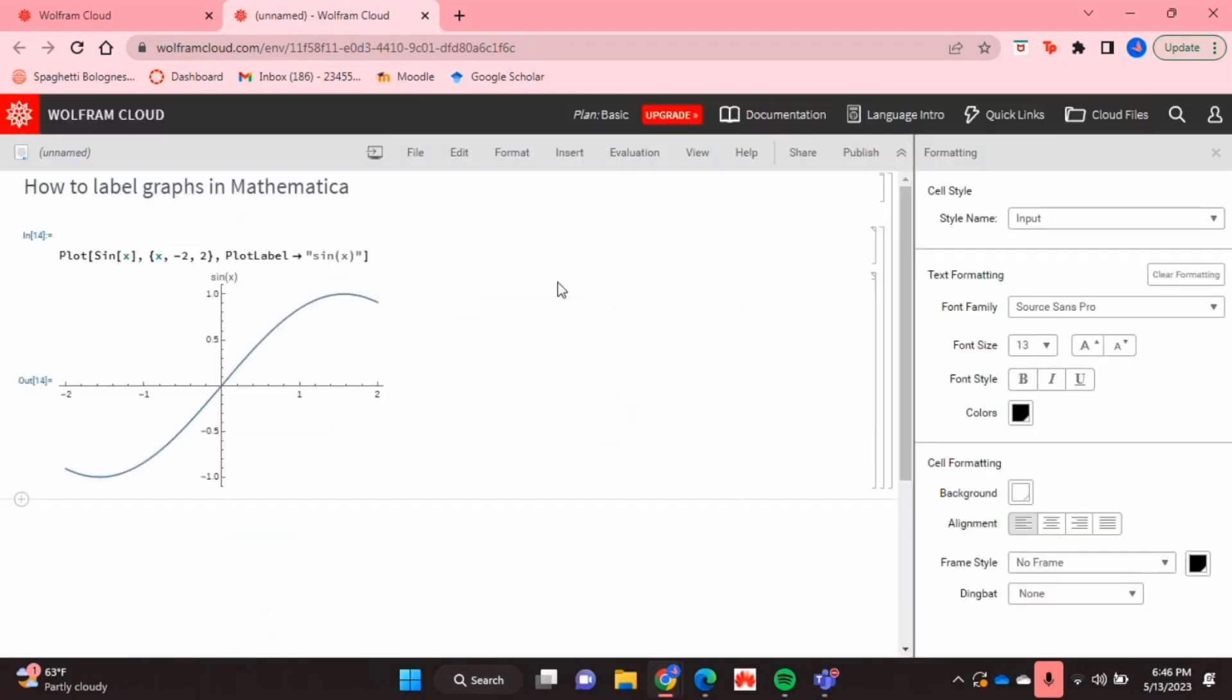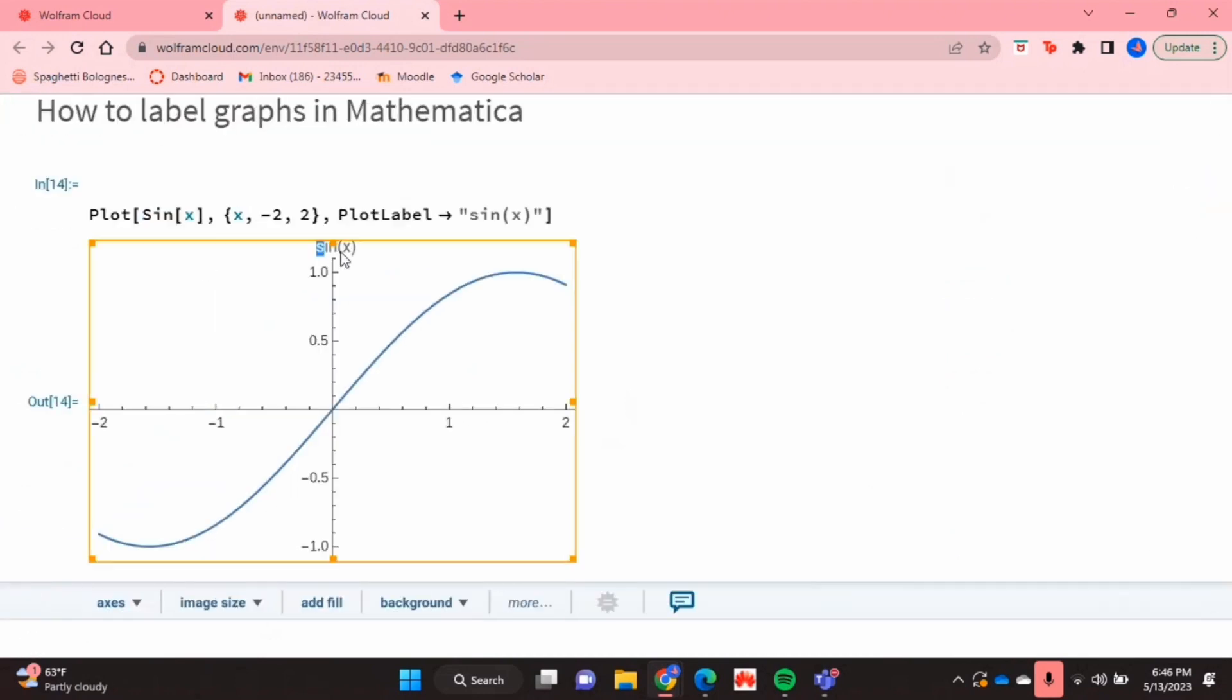So if I run this, as you can see my plot gets a label that's sin x here at the top, and that's the title of my plot.